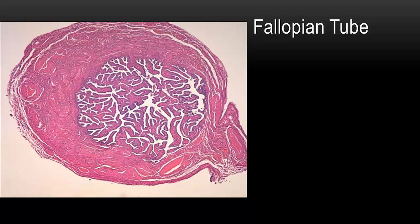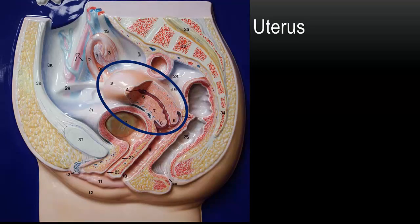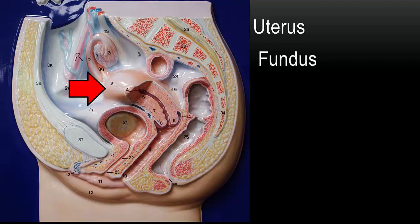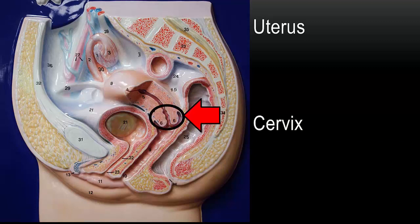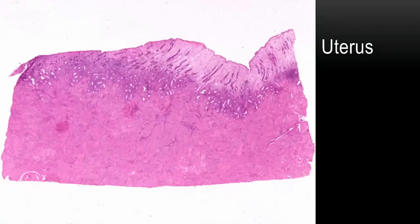Let's talk about the uterus. The top of the uterus is called the fundus. Underneath, we find the body of the uterus. And the opening of the uterus into the vagina is called the cervix — the area in the circle is the cervix. In this slide, we see a complete section of the uterus showing the uterine muscle as well as the surface, or endometrium, of the uterus.